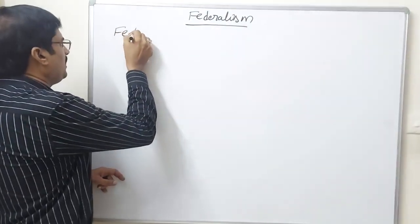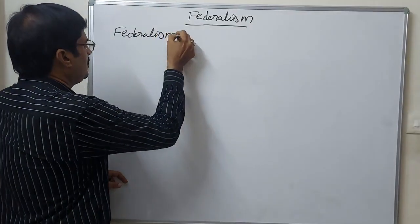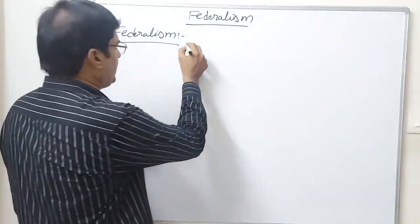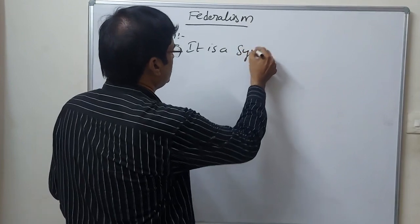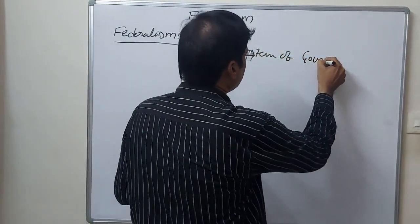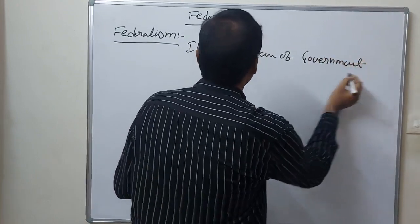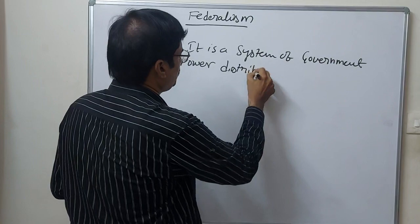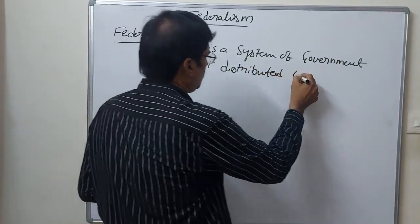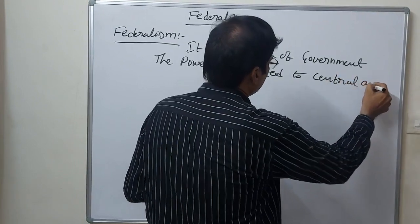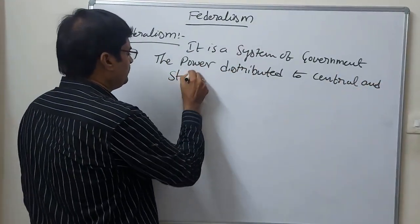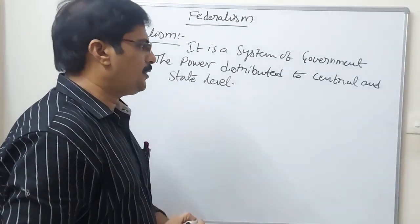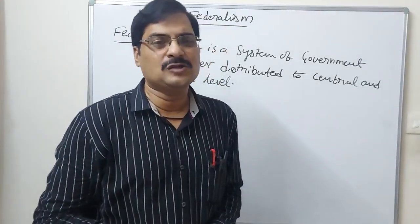First of all, what is the meaning of Federalism? It is a system of government where power is distributed to the central and state level. This is called Federalism.